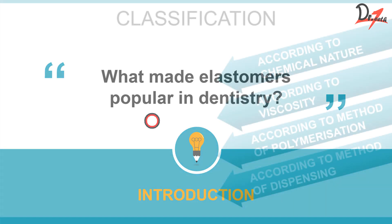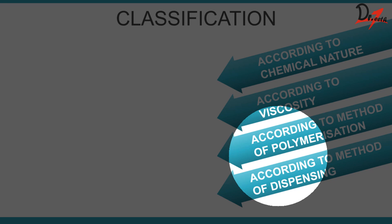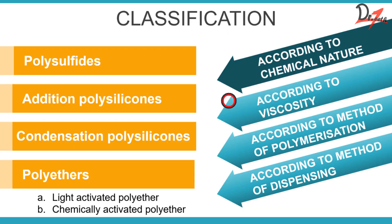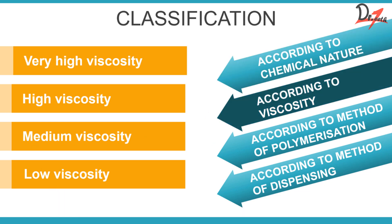Coming to classification, elastomers can be classified in four ways: according to chemical nature, viscosity, method of polymerization, and method of dispensing. According to chemical nature, we have polysulfide, addition polysilicone, condensation polysilicone, and polyethers. Polyethers can also be of two types: light-activated polyether and chemically activated polyether.